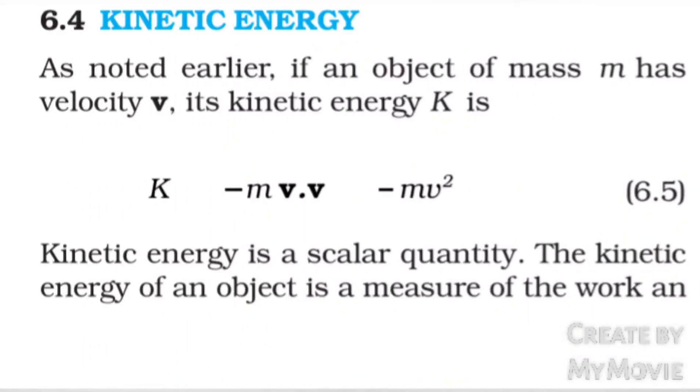Kinetic energy. As noted earlier, if an object of mass m has velocity v, its kinetic energy K is K equals half m v dot v equals half mv squared. Kinetic energy is a scalar quantity.